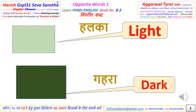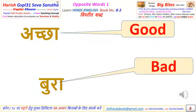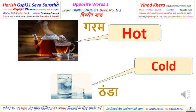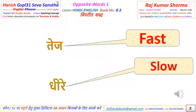Light, Dark. Good, Bad. Hot, Cold. Fast, Slow.